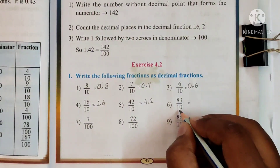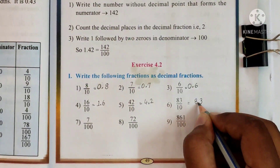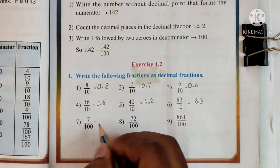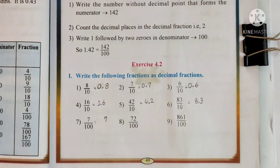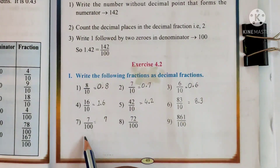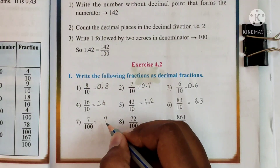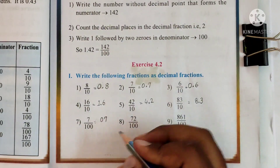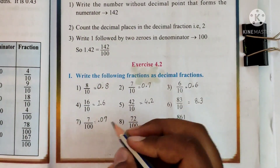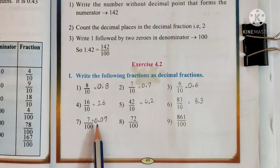Number 6: 83 tenths — write 8 and 3. After 1 number, since there is 1 zero in the denominator, put a decimal point: 8.3. Number 7: 7 by 100, or 7 hundredths. You have only 1 number in the numerator but since there are 2 zeros in the denominator, you have to place the decimal point after 2 numbers from the right. You only have 1 number, so write a 0 there to make it 07. Now after 2 numbers, place the decimal point, and write another 0 to the left. So 7 hundredths can be written as 0.07.